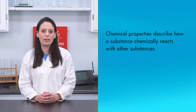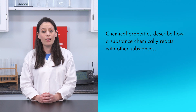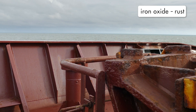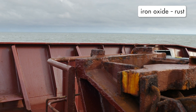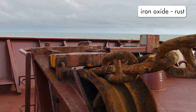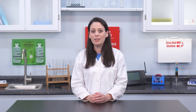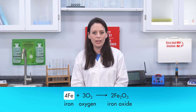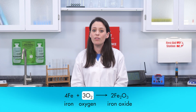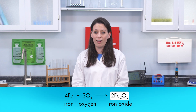Chemical properties describe how a substance chemically reacts with other substances. For example, one chemical property of iron is that it reacts with oxygen to form iron oxide, which is commonly called rust. In its simplest form, the chemical equation for this reaction is: four moles of iron react with three moles of oxygen to produce two moles of iron oxide.